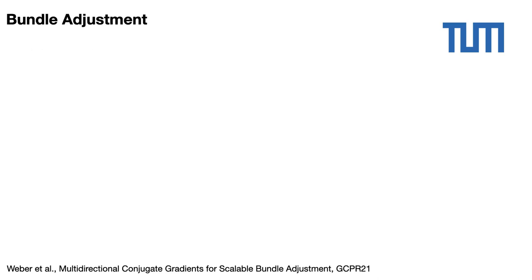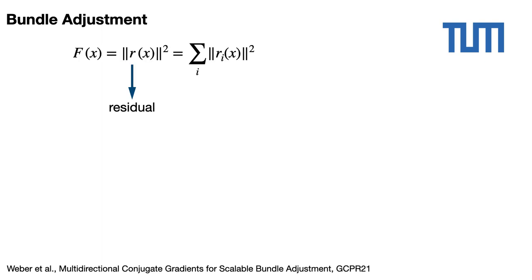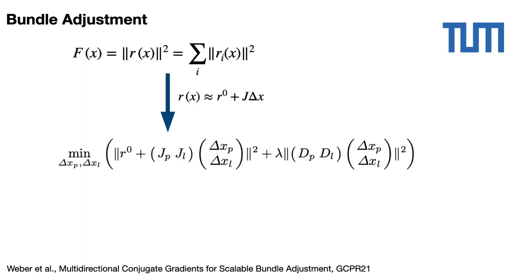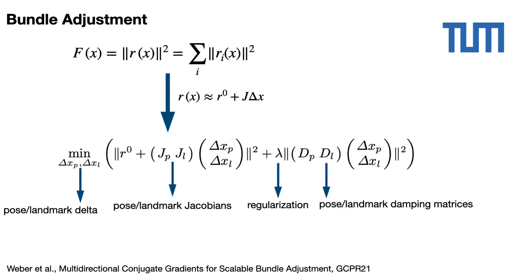The objective of the bundle adjustment problem is to minimize the sum f of squared residuals, where r is the vector of residuals for a 3D reconstruction. It is usually solved with the Levenberg-Marquardt algorithm, based on the first-order Taylor approximation of r. A regularization term is added to improve the convergence, giving the damped linear least squares problem.